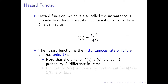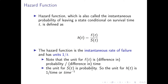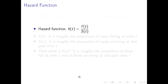For f of T, in the numerator we have a difference of probabilities, and in the denominator a difference in time. The unit for uppercase S of T, the survival function, is probability. So when we take the ratio of these two quantities in terms of their substantive units, the unit for hazard function H of T is one over time, or time inverse.